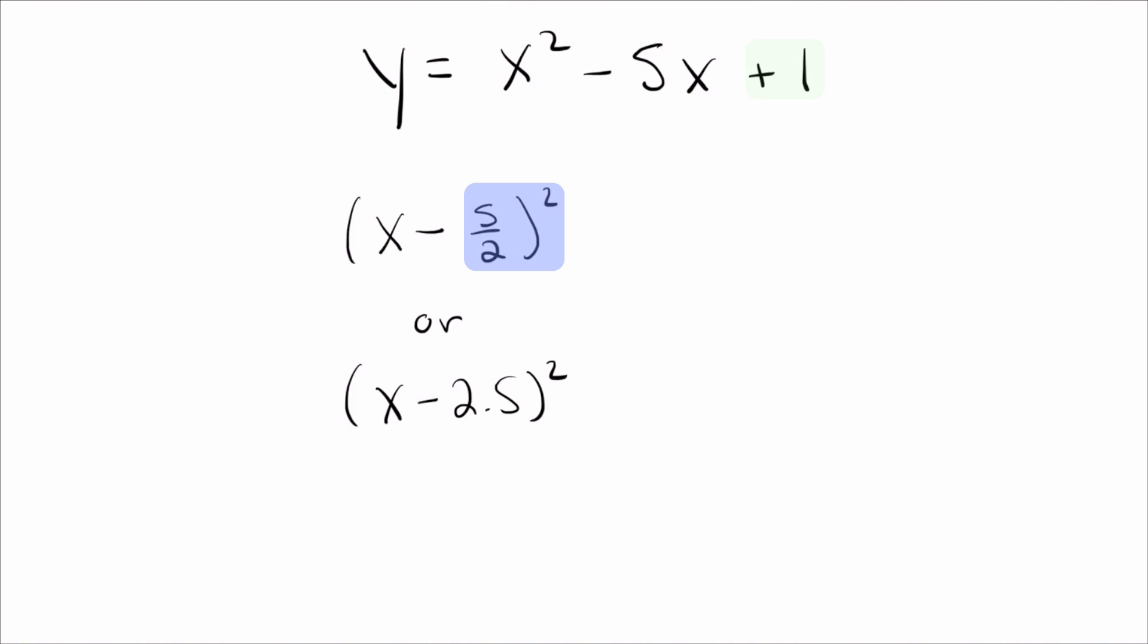But in fact, you can still do it with the fractions, and it's just because 5 halves squared is going to be 25 over 4. I don't want 25 over 4, I want 1. And 1, of course, is the same thing as 4 over 4. So to get from 25 over 4 to 4 over 4, I need to subtract 21 over 4. And there we go. I still was able to complete the square.